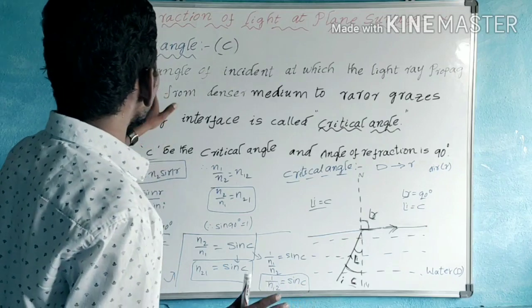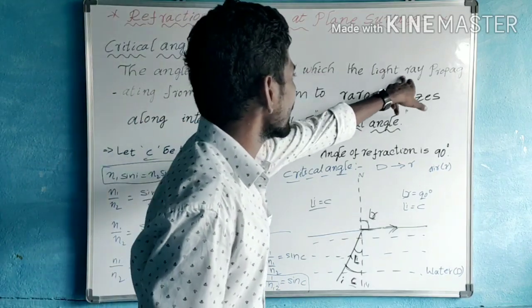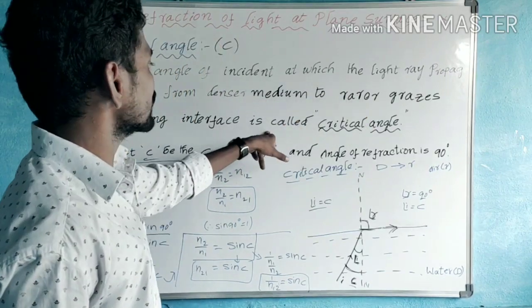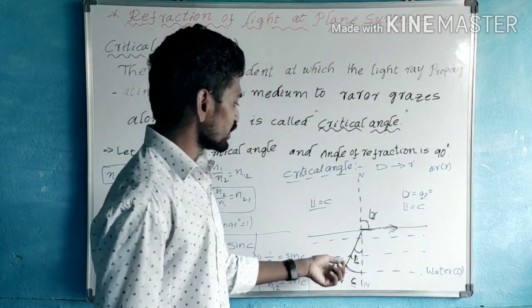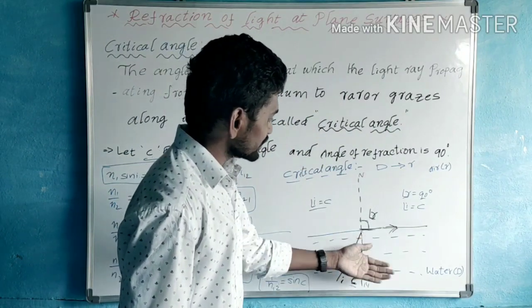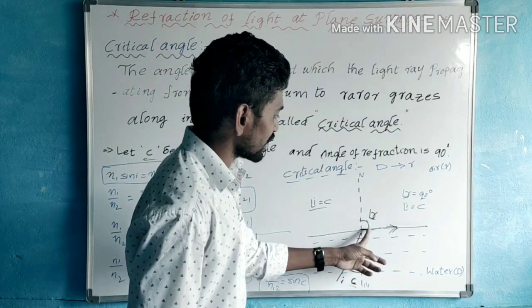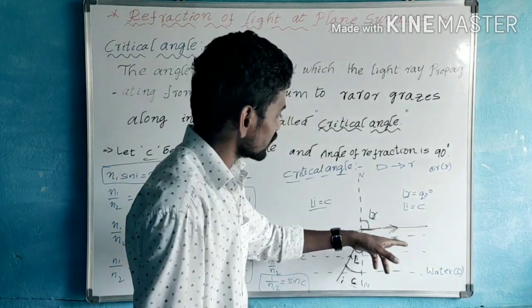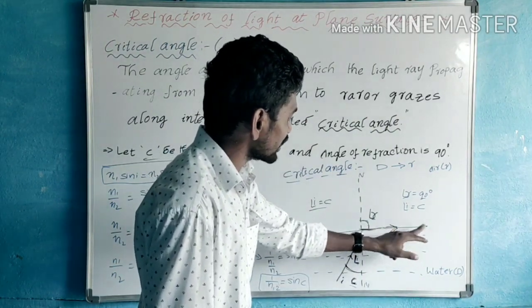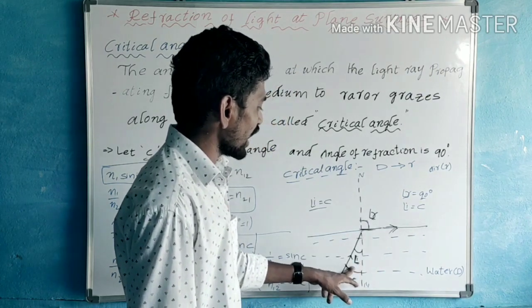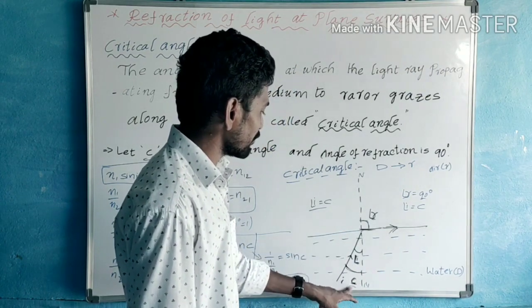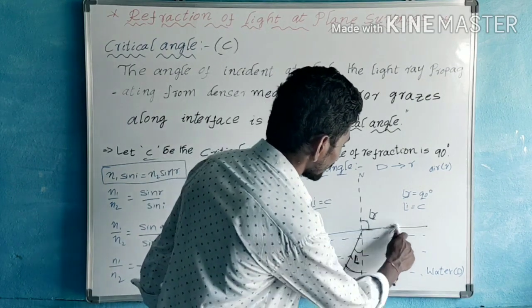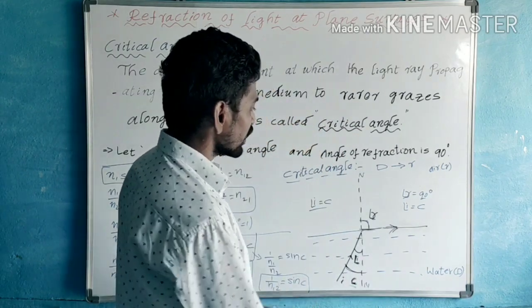So this is the critical angle. The angle of incidence at which the light ray propagates from denser medium to rarer medium and grazes along the interface is called the critical angle. The angle of incidence I at which the refracted ray travels along the interface — that angle of incidence is the critical angle.